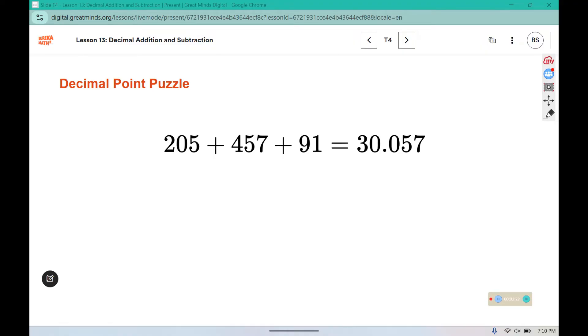In this number sentence, the sum is correct, and the digits in the addends are correct, but the place values are incorrect. Try and determine where the decimal places would go in these three numbers to get an answer of 30.057. Pause here. Try a couple out. Place some decimal points in there and see if you can get them in the correct spots. Just play around for a couple of minutes and see if you can get to 30.057. Readjust if you need to in different spots.